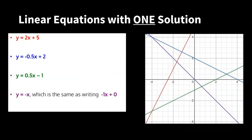Here's a reminder: the general solution is x equals minus c divided by m. Let's apply it to the red function y equals 2x plus 5. The solution is x equals minus 5 divided by 2, which equals minus 2.5. Looking at the red function on the graph — exactly minus 2.5. That's working great.